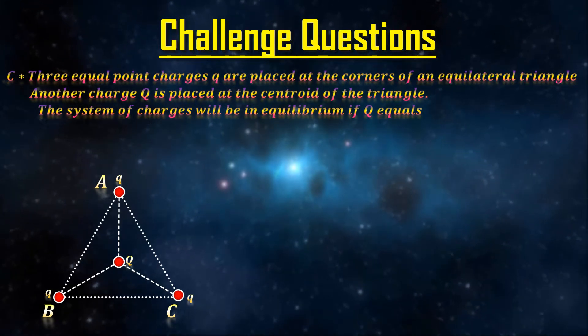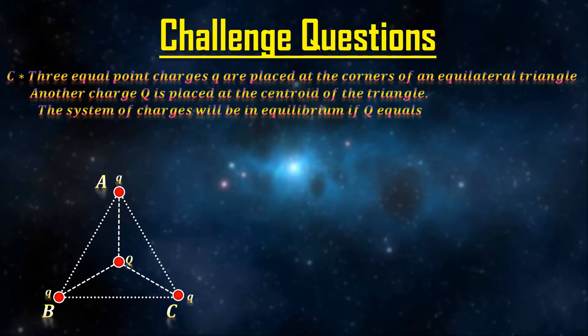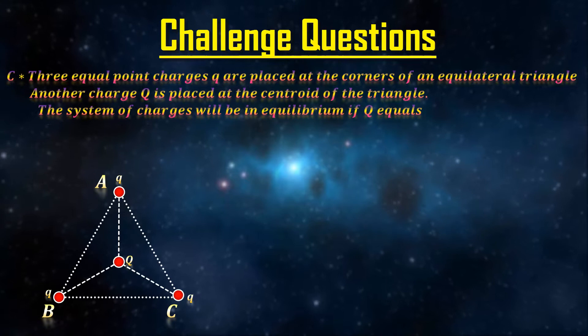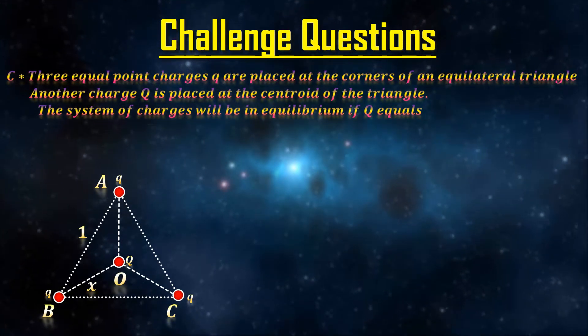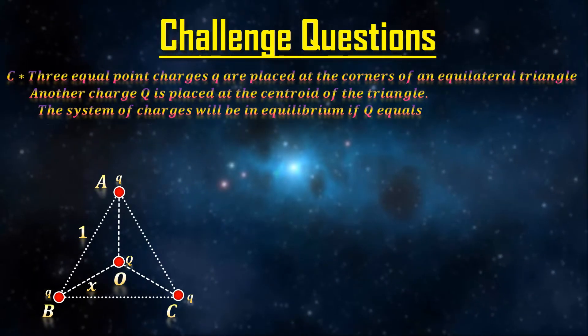Now, because I like you, I will help you a little bit more with geometry. Take the length of the side to be 1. You will need to figure out this distance, say X. For that, consider the triangle ABO.